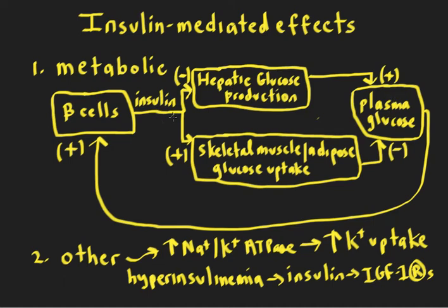When insulin goes up, for example, if you eat a meal rich in glucose, you get insulin secretion. Insulin binds to receptors on the liver, and when that happens, you suppress hepatic glucose production. When insulin binds to receptors on skeletal muscle and adipose cells, you get an increase in glucose uptake. The combination of these two things lowers the plasma glucose and stabilizes it back down to the normal range.